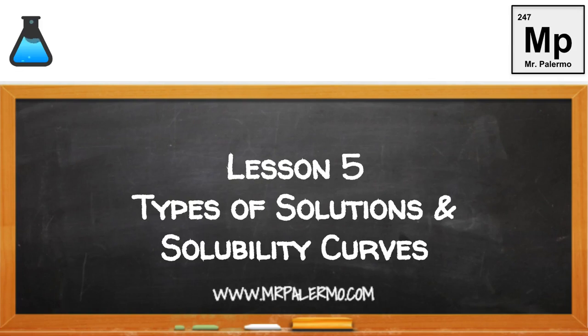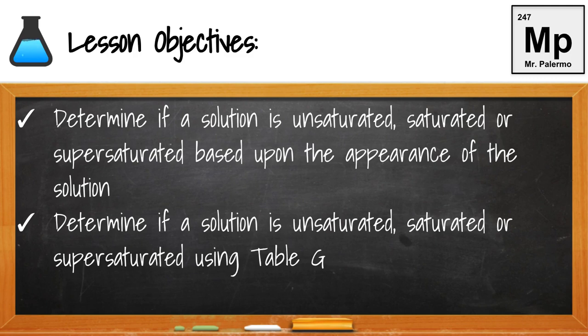Welcome to Lesson 5 on Types of Solutions and Solubility Curves. Our lesson objectives are to determine if a solution is unsaturated, saturated, or supersaturated based upon the appearance of the solution, as well as using Table G in our reference table.